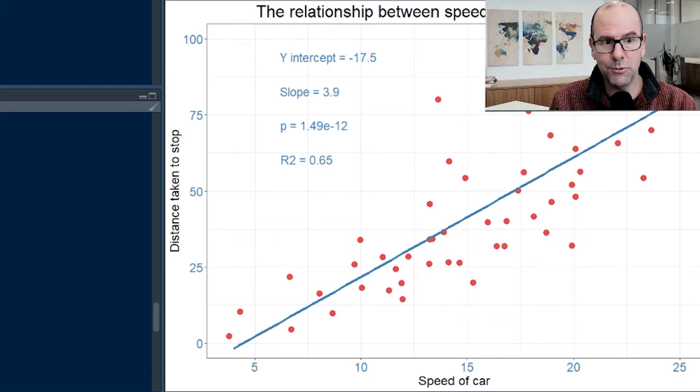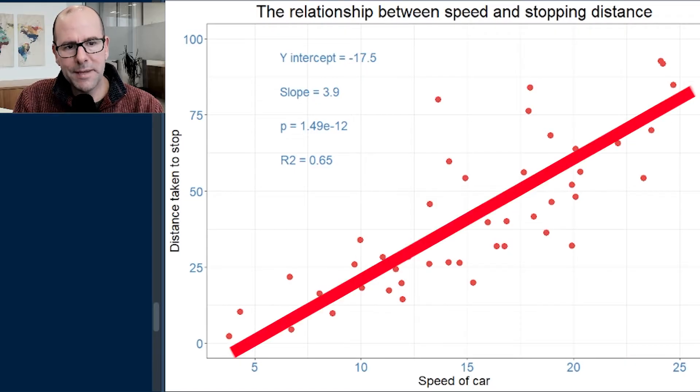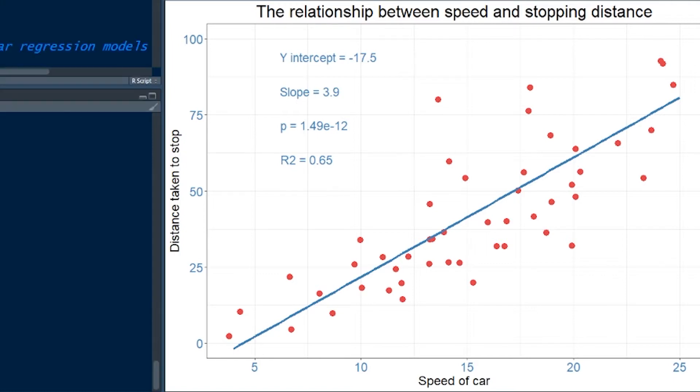Then we can plot a best fit line. I'm not going to get into the mathematics of how you plot a best fit line. Just take it for granted that this line is the best possible fit through this data. There's an upward slope. How do we know if that's real? Let's find out.